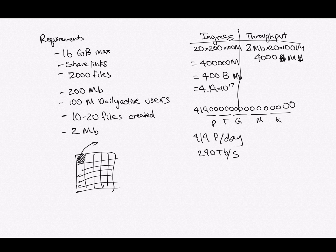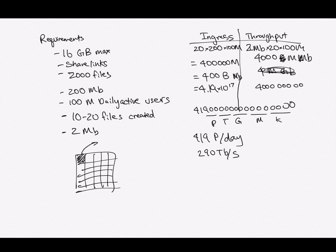So instead, we can upload 2 megabyte chunks. If we multiply the average chunk size by the number of files and the number of users per day, that's 4,000 million megabytes, which comes out to 4.19 times 10 to the 15 bytes.